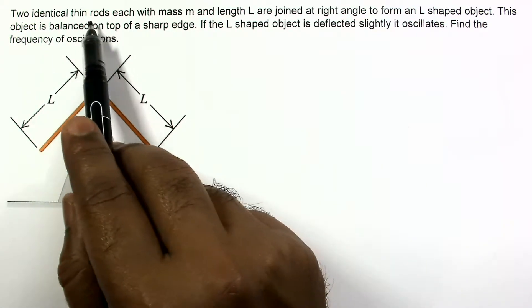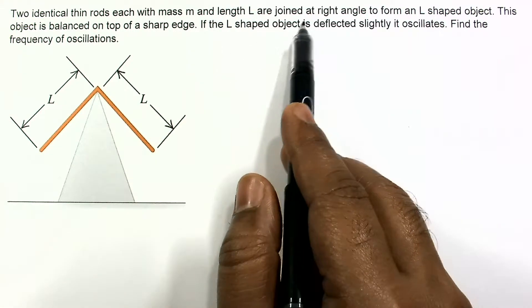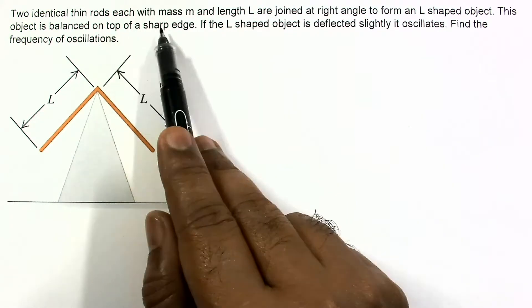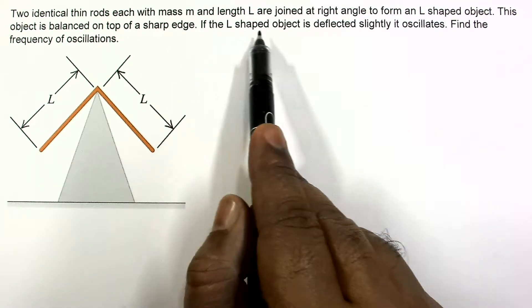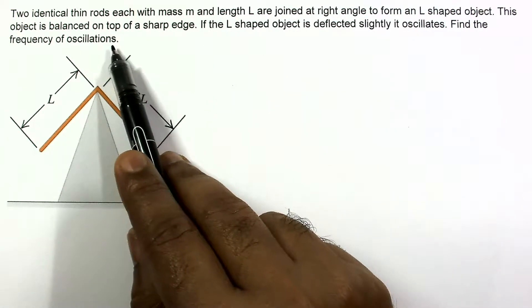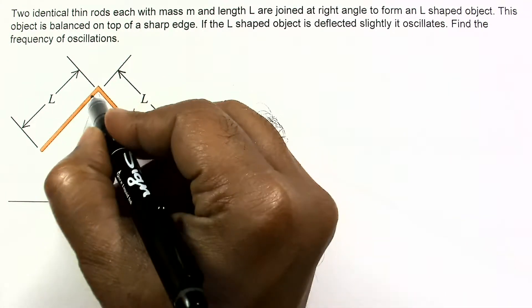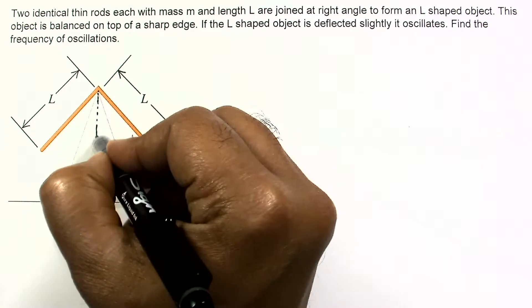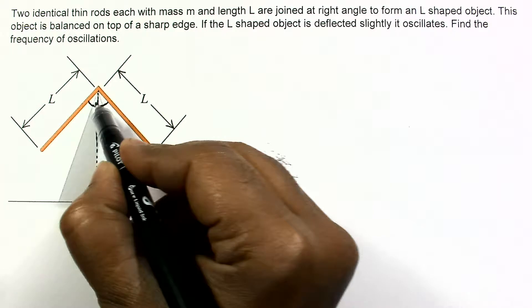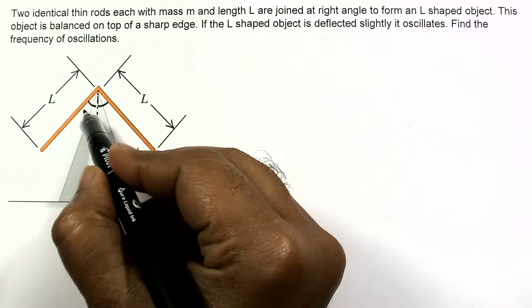In this question, two identical thin rods each with mass M and length L are joined at right angles to form an L-shaped object. This object is balanced on top of a sharp edge. If the L-shaped object is deflected slightly, it oscillates. Find the frequency of oscillations. In the equilibrium situation when it is kept symmetrically, these two angles are equal and both equal to 45 degrees.